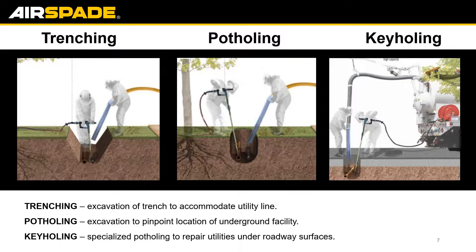This is a nice breakdown of the specific applications — trenching, potholing, and also keyholing. Trenching is going to be for larger-scale excavation when maintenance or installation of any utility infrastructure is occurring. Potholing is typically for verifying the lines or locates of the infrastructure before any larger excavation begins. It seems here that people are using the Air Spade and the Air Vac in tandem — would you suggest that? Yes, it's actually going to speed up excavation quite a bit. In larger projects, companies are going to have large vacuum trucks that use the Air Spade along with the vacuum.